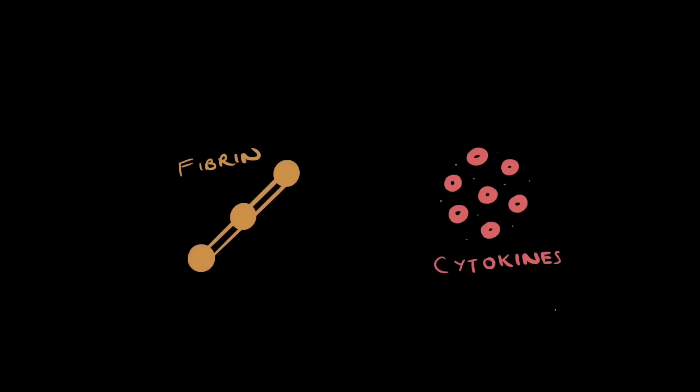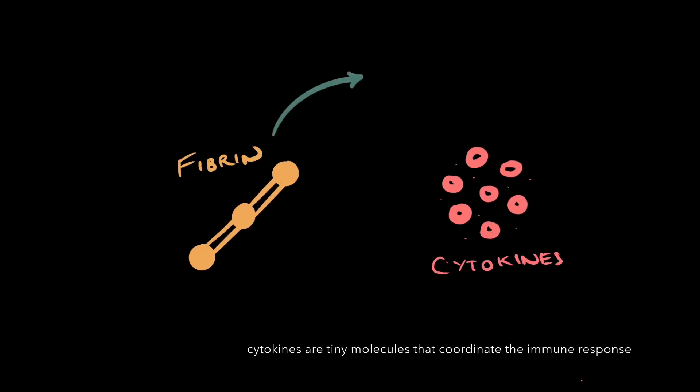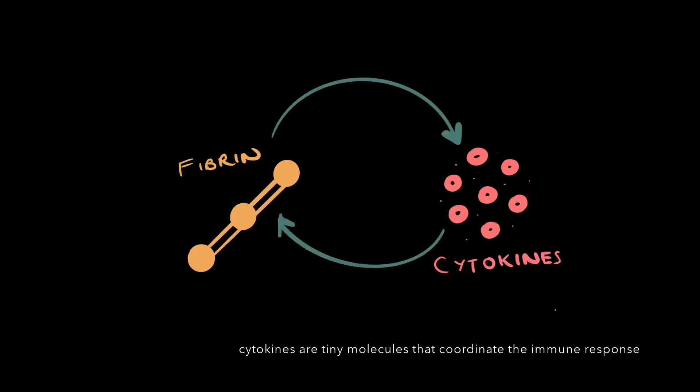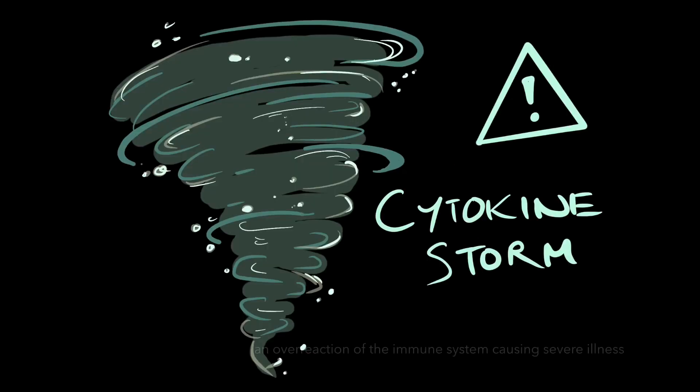In patients badly affected by COVID-19, fibrin produces cytokines, which in turn cause more release of fibrin, a disastrous positive feedback loop called a cytokine storm.